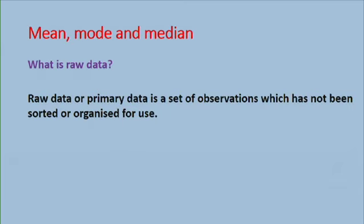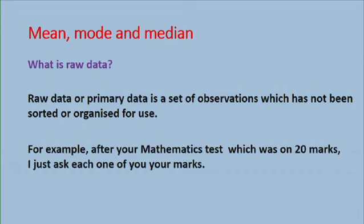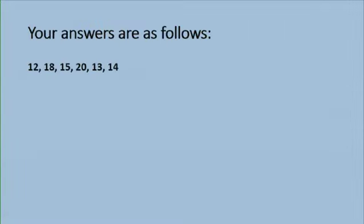So raw data, we also call it primary data. It is a set of observations which has not been sorted or organized for use. For example, after your mathematics test, which was on 20 marks, if I ask each one of you your marks, so this is what I have been given as answers.